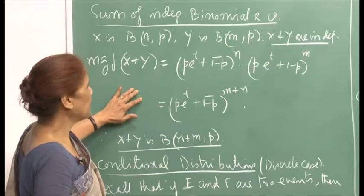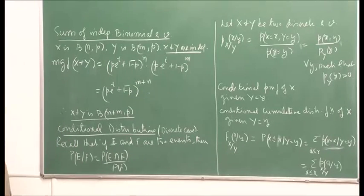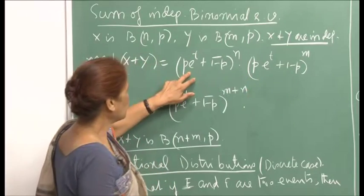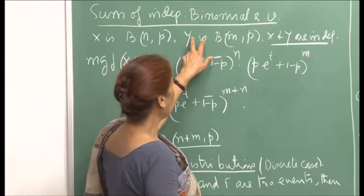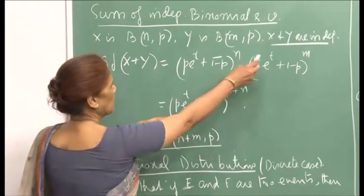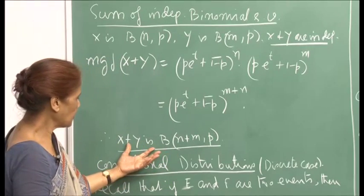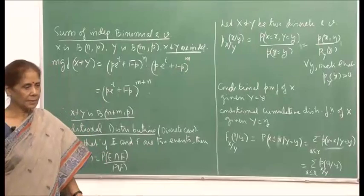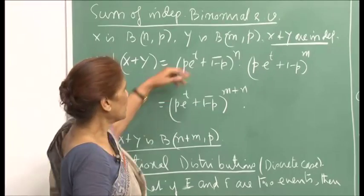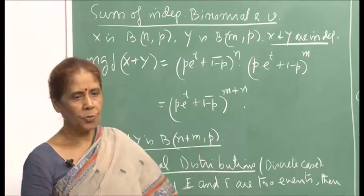For the sum of independent binomial random variables: if X is Binomial(n, p) and Y is Binomial(m, p), and X and Y are independent, then the MGF of X+Y equals (pe^t + 1-p)^n · (pe^t + 1-p)^m = (pe^t + 1-p)^(m+n). This is immediately the MGF of a Binomial(m+n, p). So if the probability of success is the same, the sum of two binomials is binomial with the number of trials added.